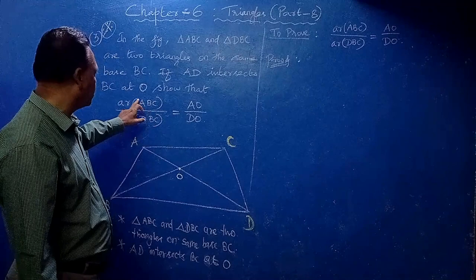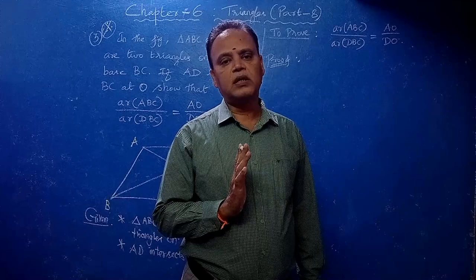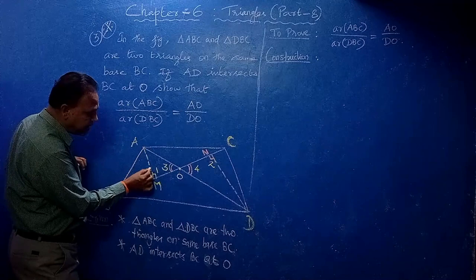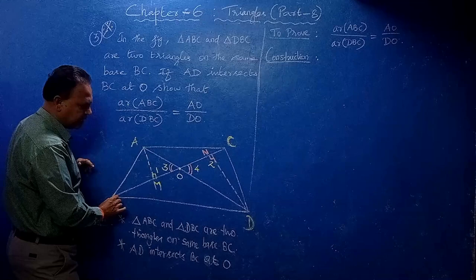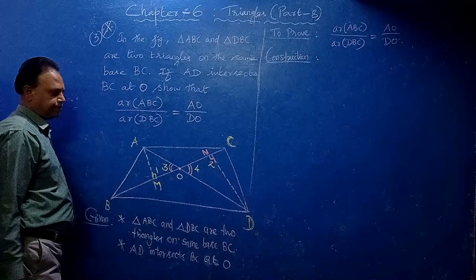When area is involved, first you have to prove two triangles are similar. For this problem you need a construction — this is very important. Draw AM perpendicular to BC, and draw DN perpendicular to BC. This gives you the base and height for each triangle.